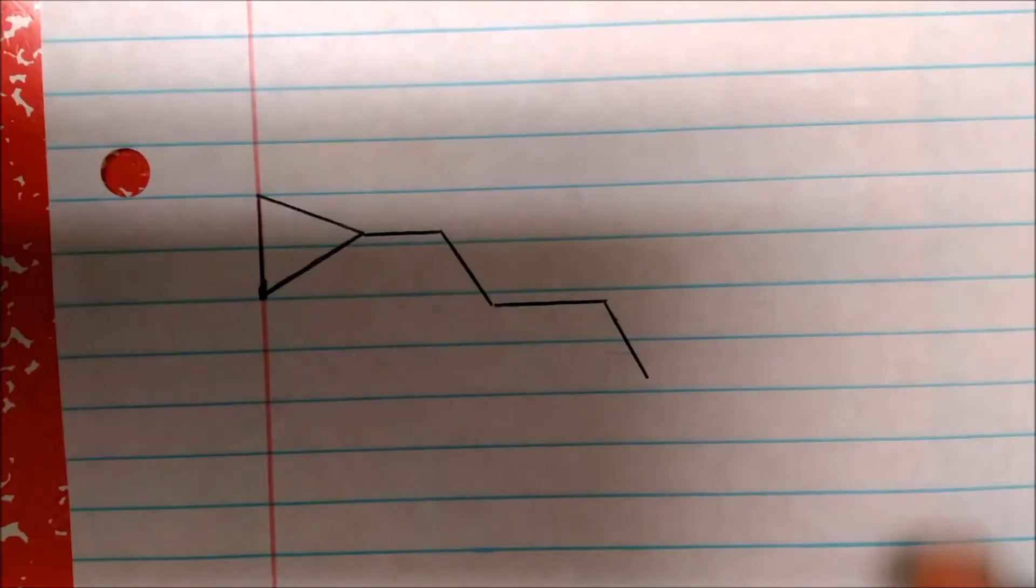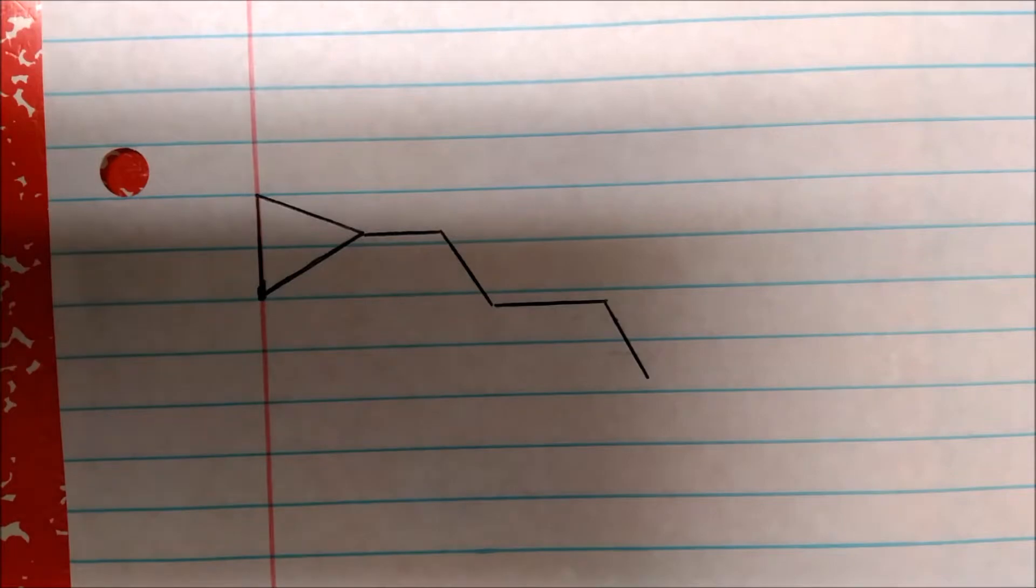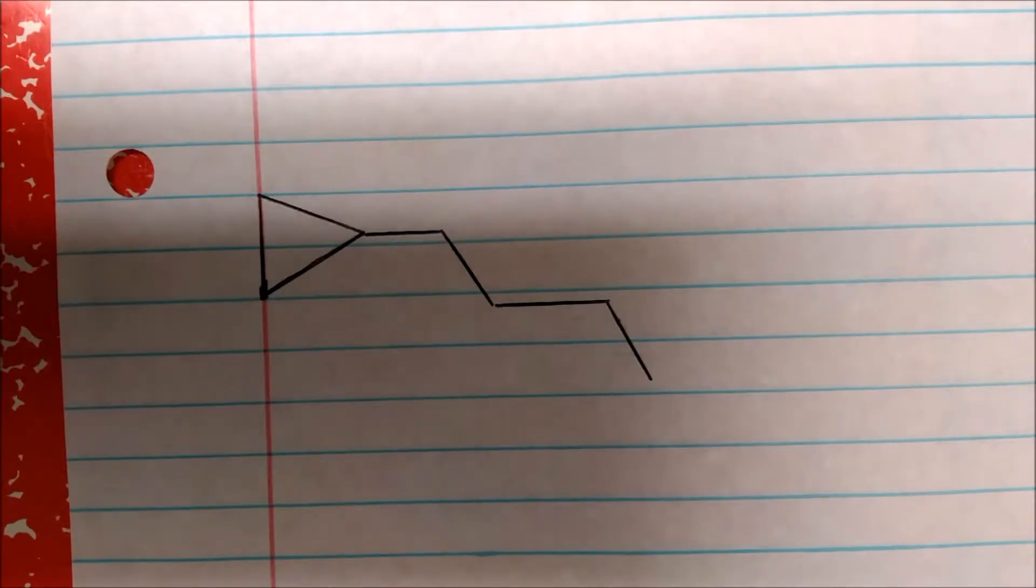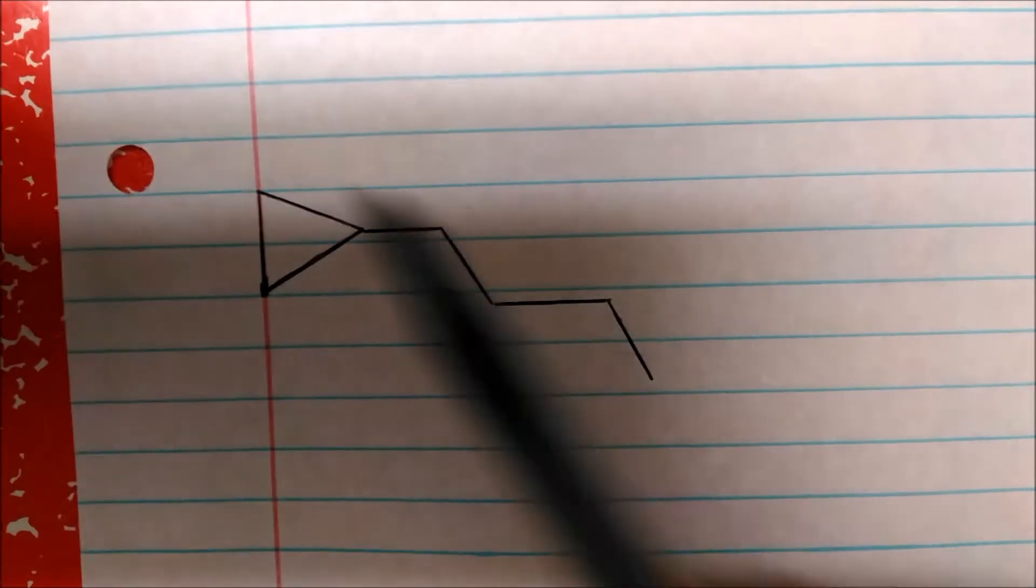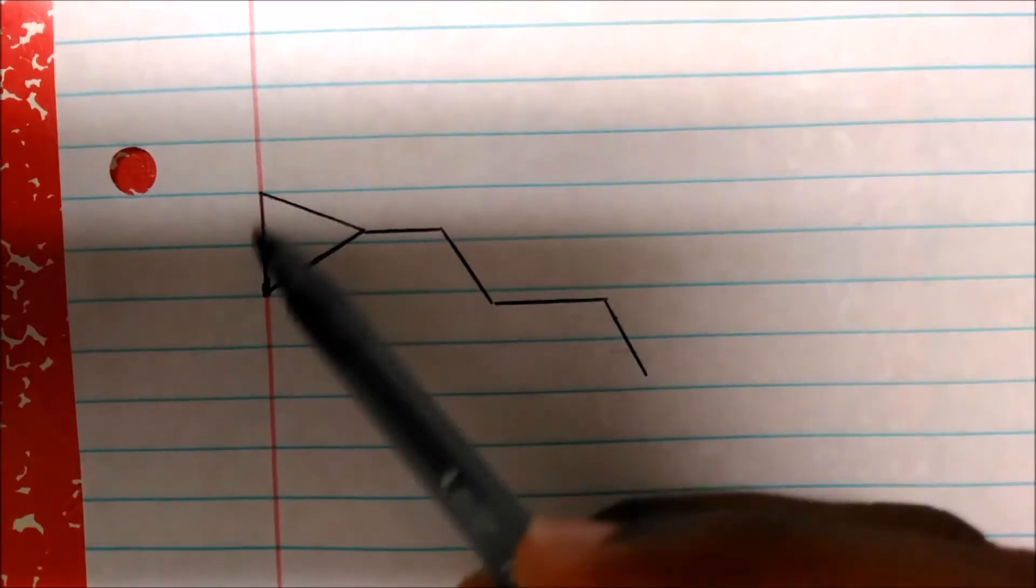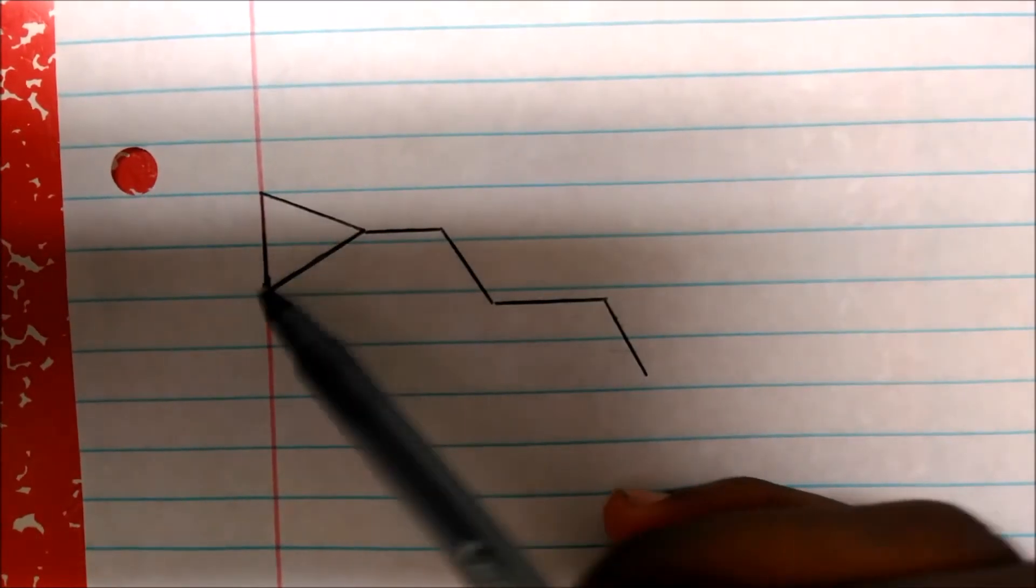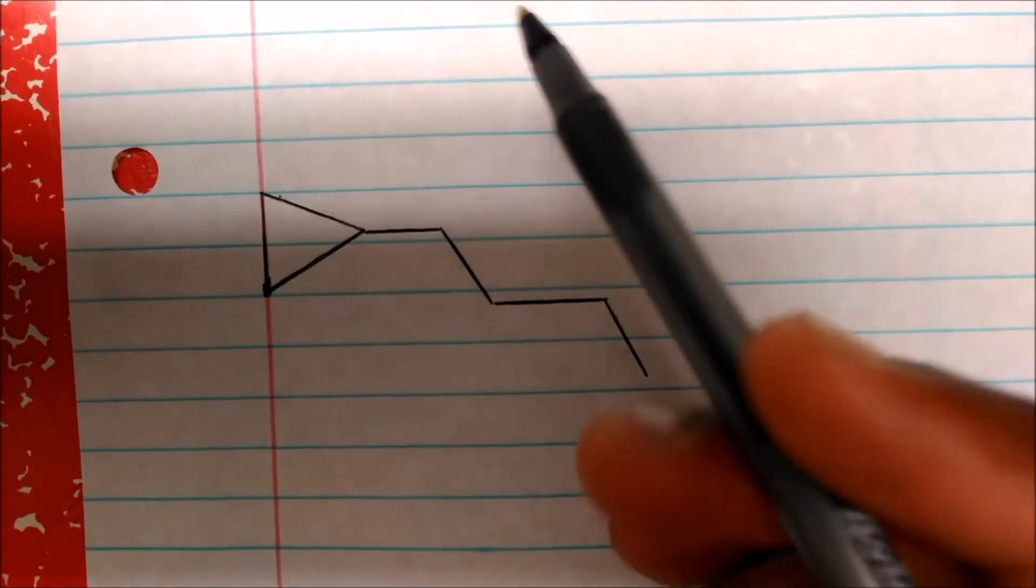Let's look at this one. Here's the rule. Whenever your substituent has a longer carbon chain than the actual cyclic part of the molecule, then actually the cyclic part of the molecule becomes the substituent. So if you can see here, this is propane. The cyclic molecule is propane, one, two, three. That's propane.